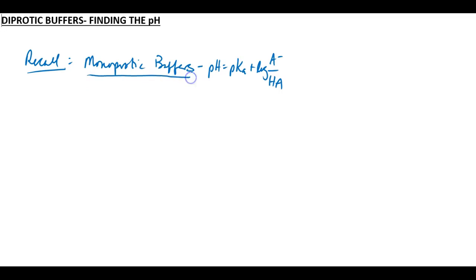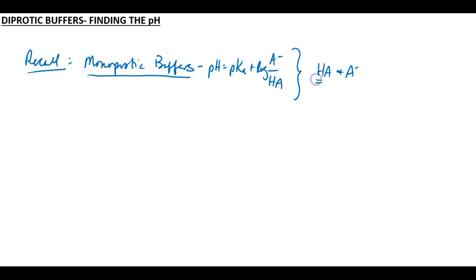With a monoprotic buffer, the only option we could have was a buffer that contained HA and A minus, and the only decision you had to make was which solute was HA and which solute was A minus. Sometimes there were buffers that contained BH plus and B, but generally you just had to worry about identifying which was fully protonated and which was the unprotonated form, then put those forms into the correct place in the Henderson-Hasselbalch equation.